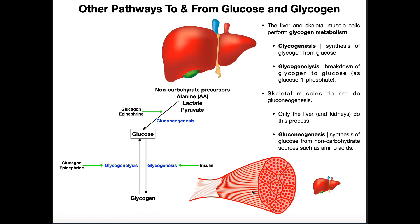So if you break down that glycogen, you're going to be producing more glucose. If blood glucose levels start to fall, signals like glucagon and epinephrine can trigger the glycogen in skeletal muscle to be broken down. That process is glycogenolysis — glycogen is converted or broken down into glucose molecules, which then go into the blood to maintain blood glucose levels.